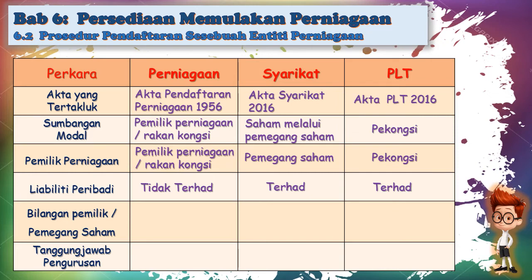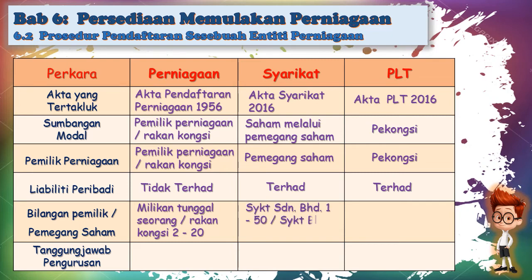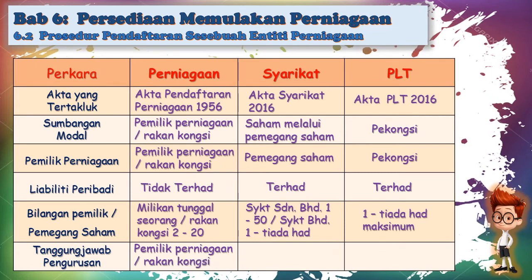Bilangan pemilik atau pemegang saham: perniagaan milikan tunggal adalah seorang. Perkongsian antara 2 hingga 20 orang. Syarikat sendirian berhad, ahli minimum seorang dan maksimum 50 orang. Syarikat awam berhad, minimum seorang dan maksimum tidak terhad. Bagi PLT, minimum seorang dan maksimum tidak terhad. Tanggungjawab pengurusan: bagi perniagaan, di bawah pemilik sendiri; perkongsian di bawah rakan kongsi; syarikat di bawah lembaga pengarah; PLT di kalangan berkongsi.